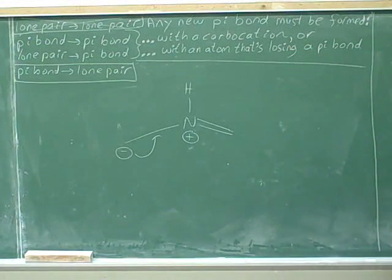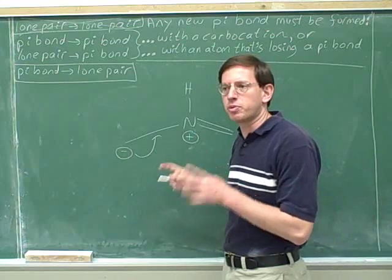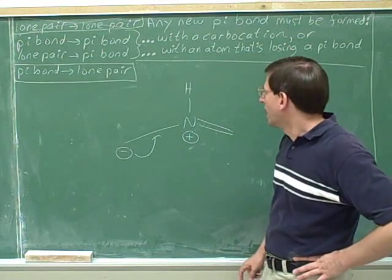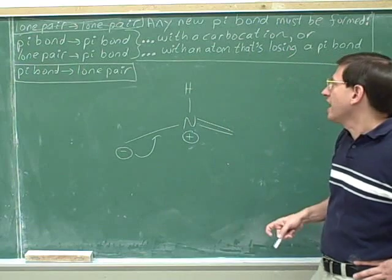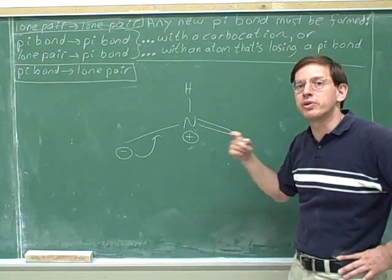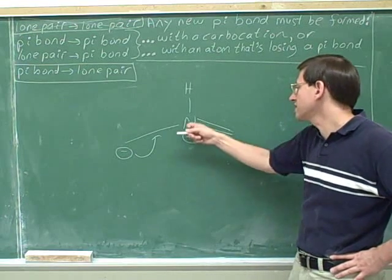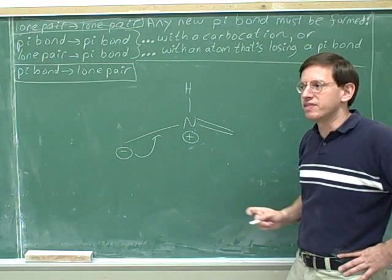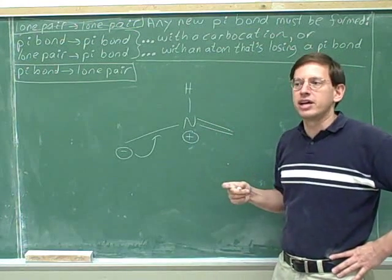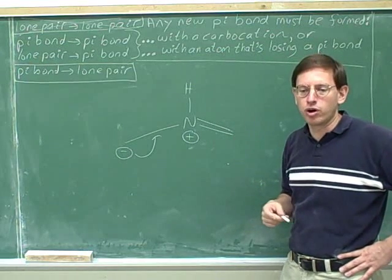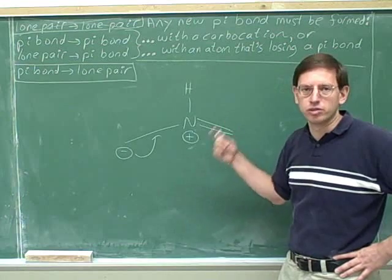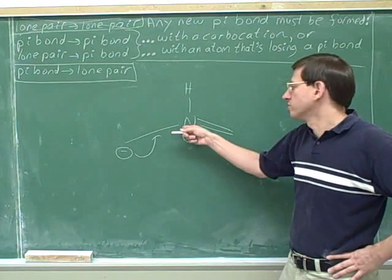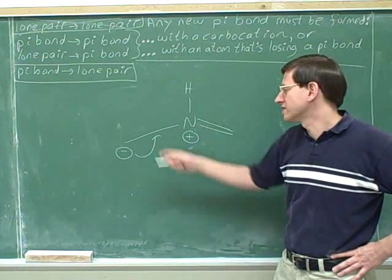Is this legal? Now this arrow is forming a pi bond — that's when we have to be careful about exceeding an octet. This is not a carbocation, so it does not have room. We're not saying that anything that's a cation has room for a new pi bond — only carbocations have room for a new pi bond. This nitrogen already has a full octet, and only carbon cations have room for new electrons. Any other type of non-metal cation is not going to have room for new electrons. And we haven't made any room here by moving any pi bonds, so this is illegal.